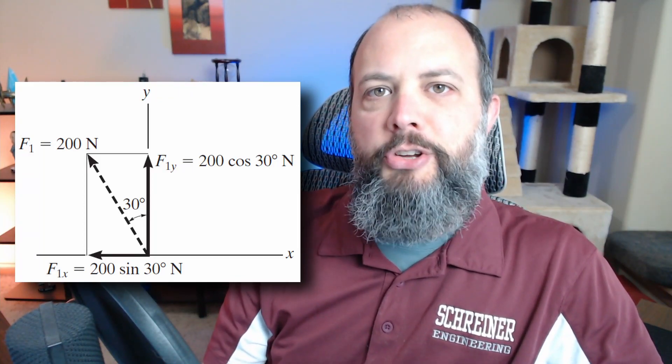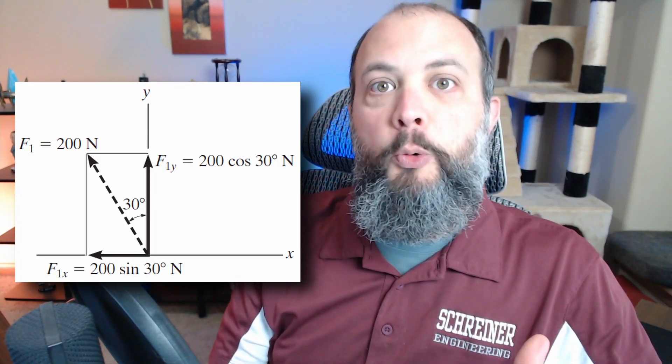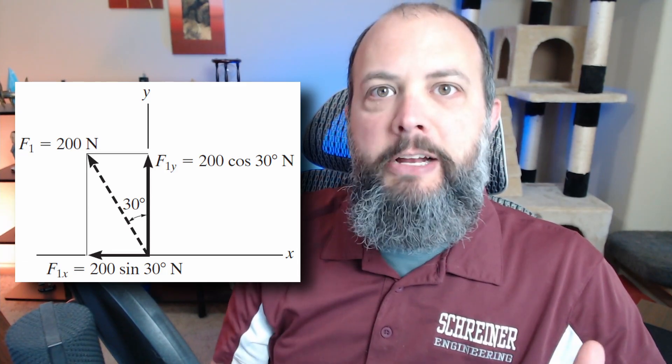Converting a two-dimensional vector to Cartesian form is pretty straightforward. Just a single cosine and sine and you're there. But for 3D force vectors, that one extra D adds a lot of extra angles.